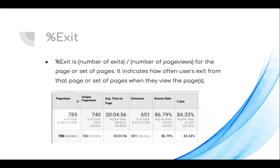The next term is percentage exit. Percentage exit is the number of exits divided by the number of page views for a particular page — it indicates how often users exit from that page. For this URL, the percentage exit is 84.33%, which helps you understand whether visitors are only interested in the content on that page or whether they navigate to other pages.